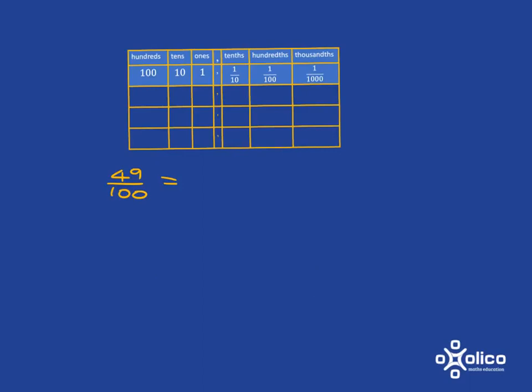Going the other way is easy, especially if you've got 10, 100, or 1,000 in the denominator. So for example, 49 over 100. You know you're going to the hundredths. So you've got 9 hundredths and you've got 4 tenths. And so it's 0.49.